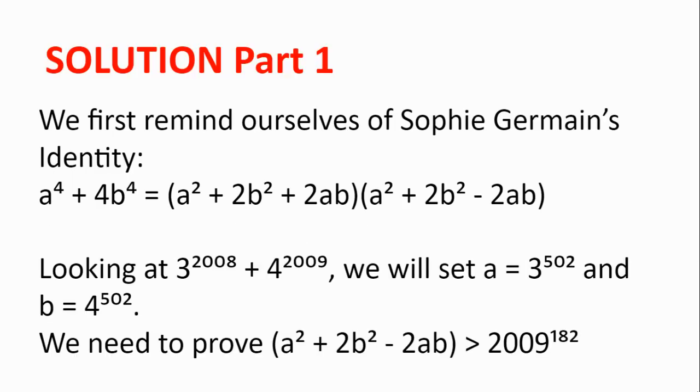Solution. We first remind ourselves of Sophie Germain's identity. So a to the power of 4 plus 4b to the power of 4 is equal to a squared plus 2b squared plus 2ab multiplied by a squared plus 2b squared minus 2ab.